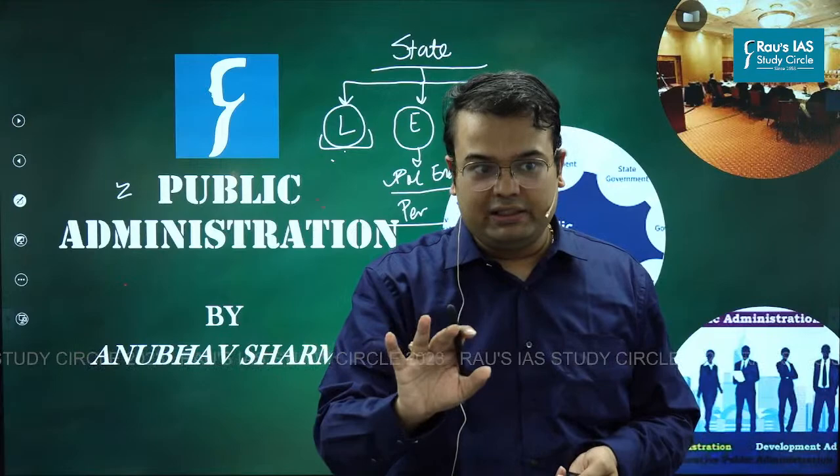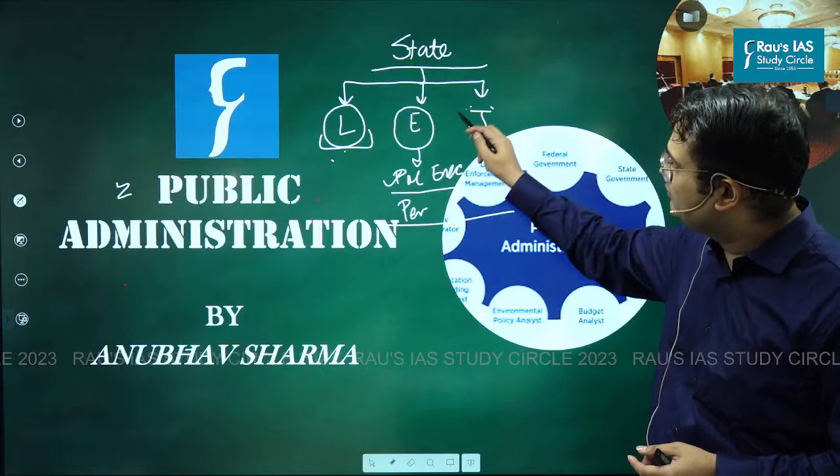If permanent executives get more powerful — that is, if they have unaccountable power in their hands — it will not be democracy. So the whole idea is the right balance. That is how our executive works.